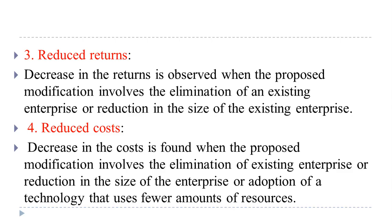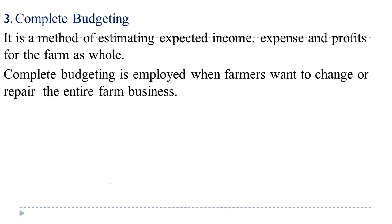These are the four important elements used to estimate the partial budget: added cost, added returns, reduced returns, and reduced cost. Now we look at the third type of farm budget: complete budgeting.